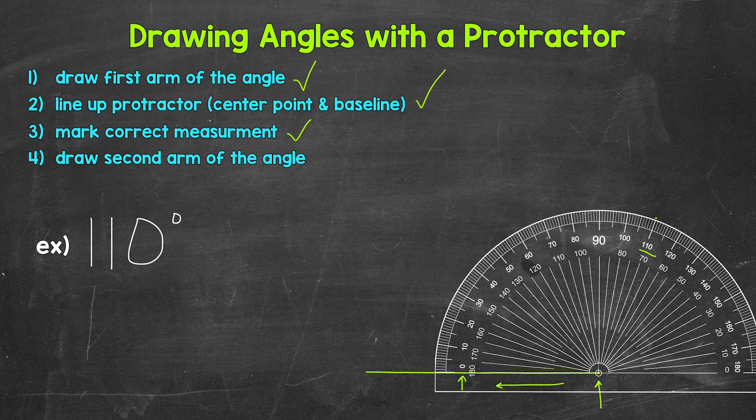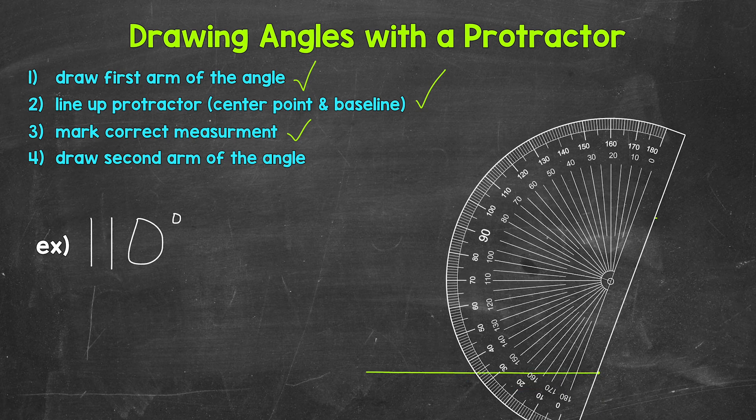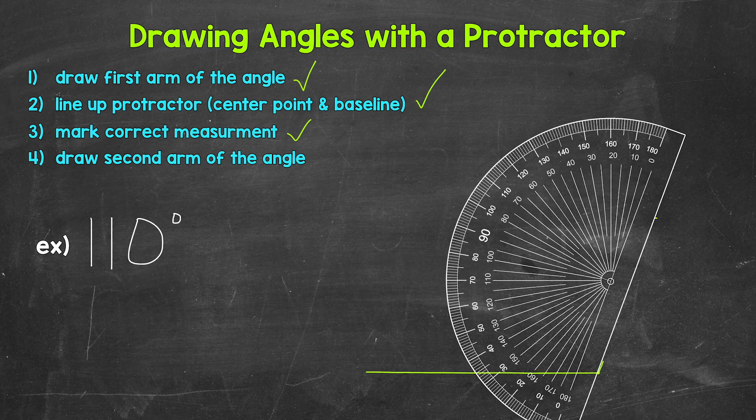Simply put, we connect our dots. We can line it up like this. Then we draw the arm from the end of the arm where the center point was to the mark we made at 110 degrees. And that's it. That's the second arm of our angle.